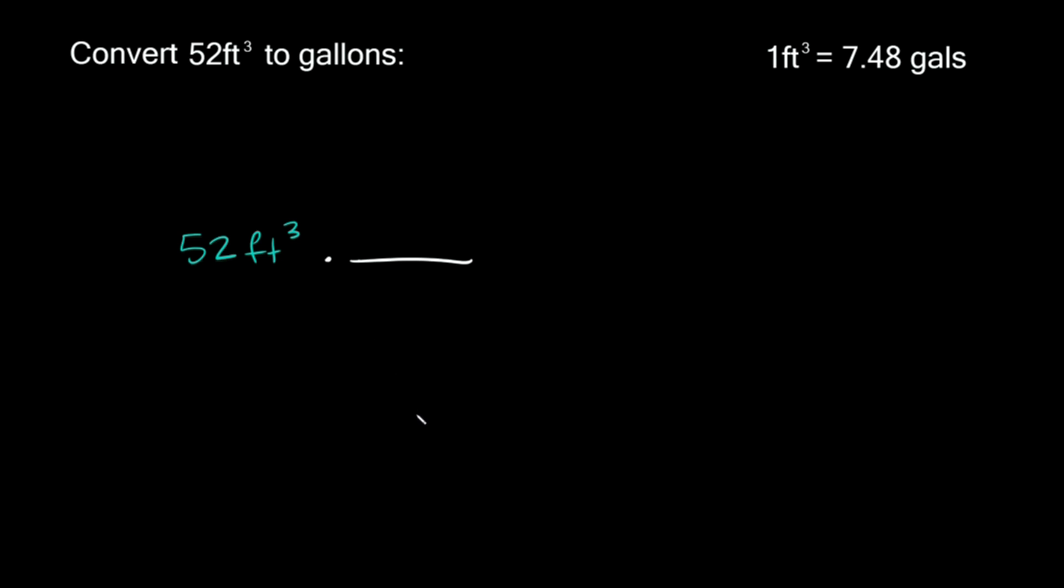Now what goes in your fraction right here? Well your conversion over here. So how do you know what goes on top and what goes on the bottom? Well one thing you always want to keep in mind is that you always want the same units on opposite sides of the fraction. So since we already have feet cubed on top over here that means we want feet cubed on the bottom over here.